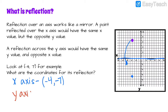Now if we try to reflect it over the y-axis — that's this one — it's going to have the opposite x value but the same y value. So its y value is already 7 and its x value is going to be opposite. The absolute value of negative 4 would be 4, so it would go over 4 and up 7. So instead of negative 4 it would be positive 4, 7 would be the y-axis reflection.